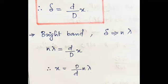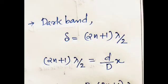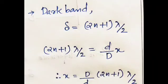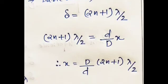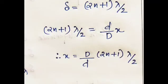For dark band condition, the path difference is (2n+1)·lambda/2. Substituting: (2n+1)·lambda/2 = (d/D)·x. Therefore x equals (D/d)·(2n+1)·lambda/2.